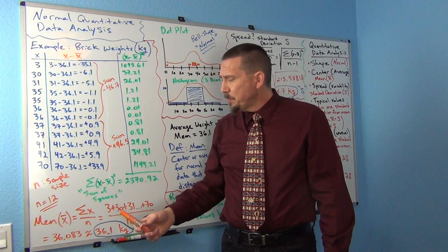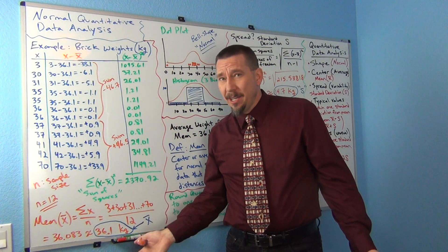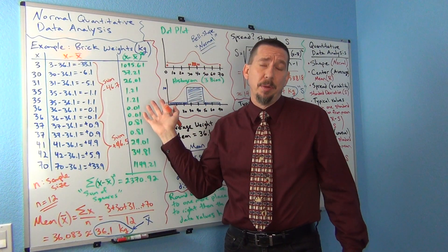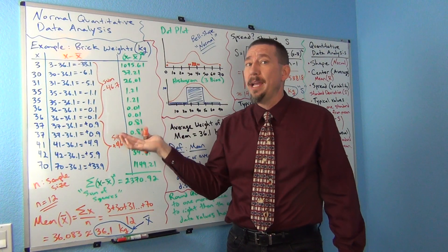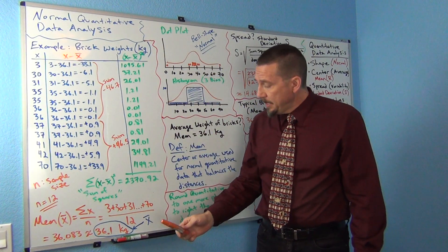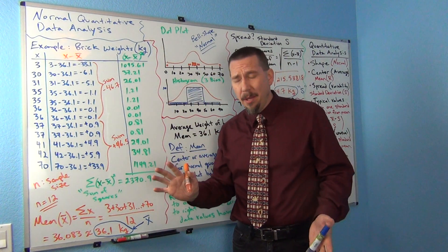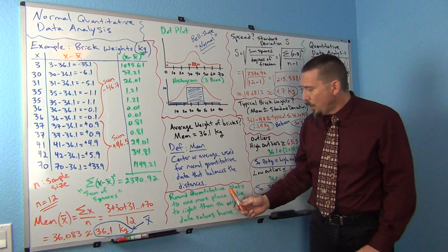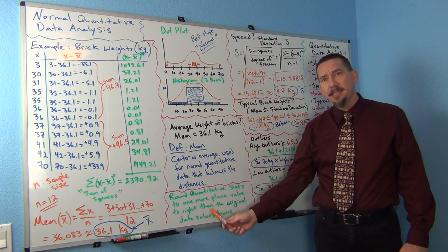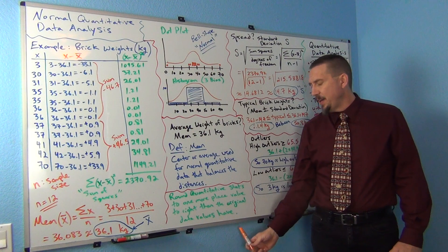If I round that, now this brings us to where do you want to round statistics. A lot of times in a computer program, they'll just give you a bunch of decimals and then let you round to whatever accuracy you want. A good rule of thumb is to round quantitative statistics to one more place value to the right than the original data values have.